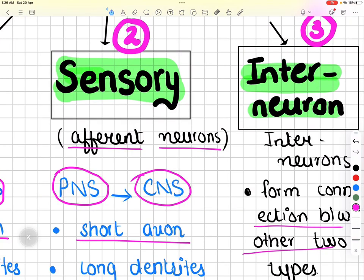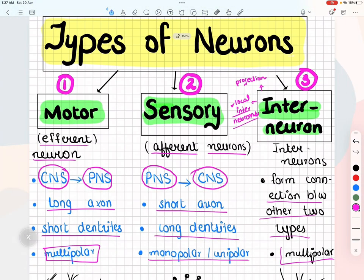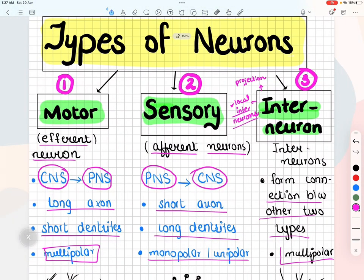Moving towards interneurons, interneurons form connections between the other two types of neurons and are also multipolar. Their subdivisions are projection or relay interneurons, and local interneurons. Projection or relay interneurons have long axons and carry information for long distances — for example, from one part of the brain to another. Local interneurons have short axons and form connections with nearby neurons. That's all about the classification on the basis of function.